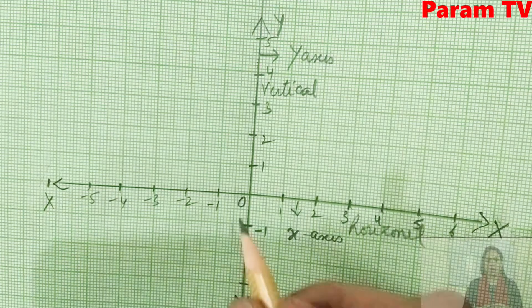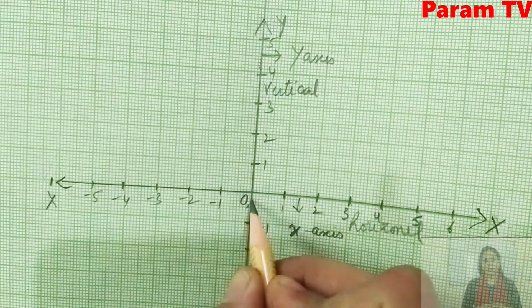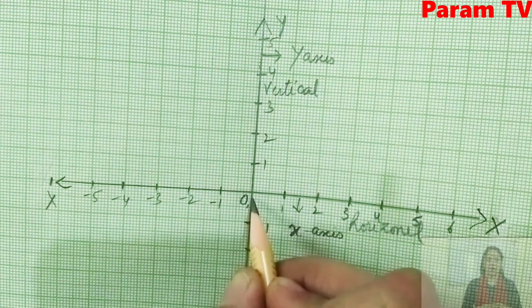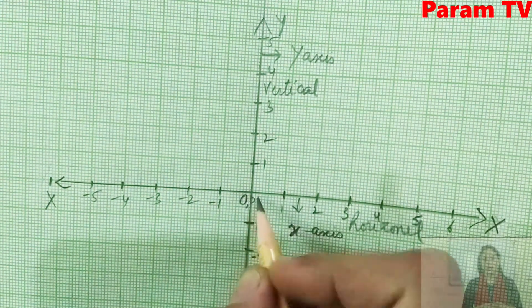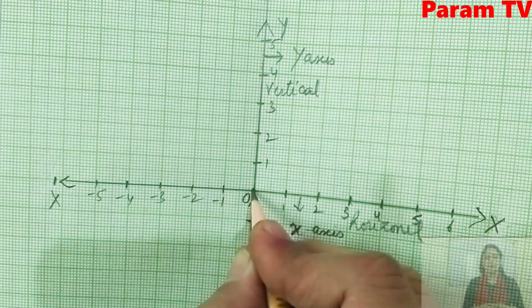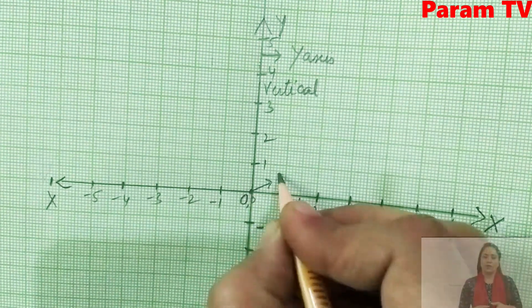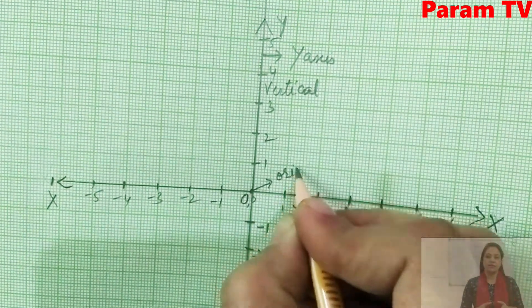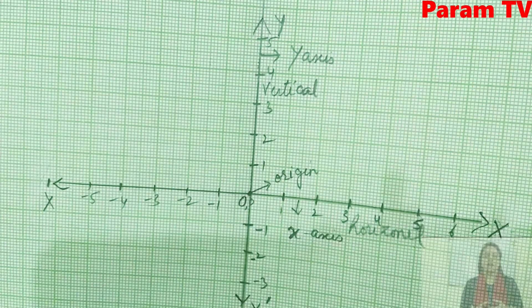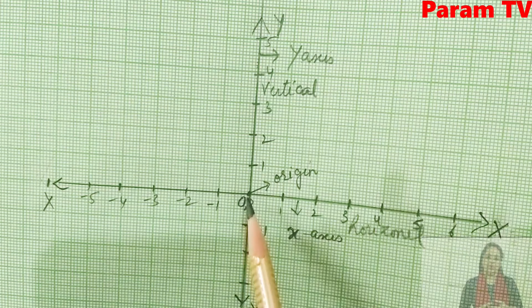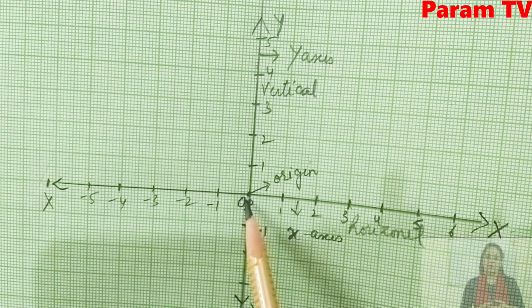Now, where the x-axis and y-axis cut each other — what is that point? It is the origin. This is the center where these two lines intersect, and it is called the origin. The coordinates of the origin are (0, 0).